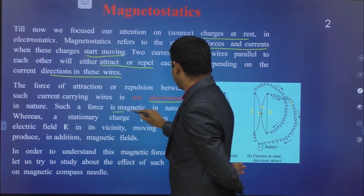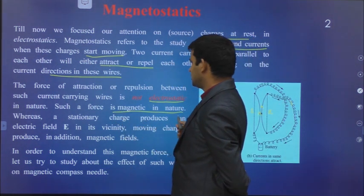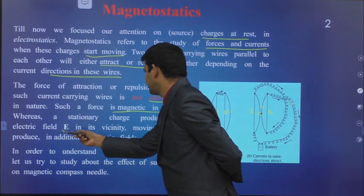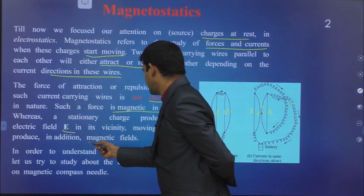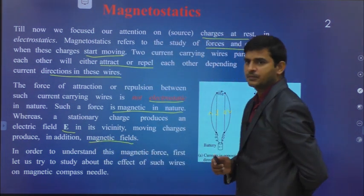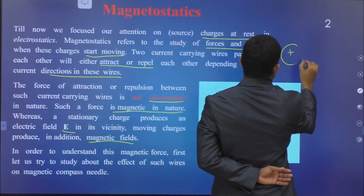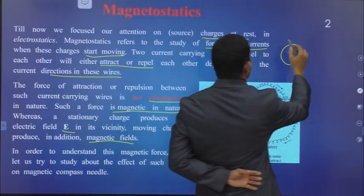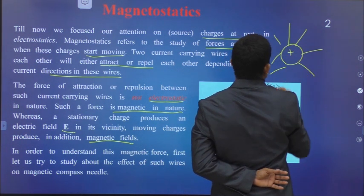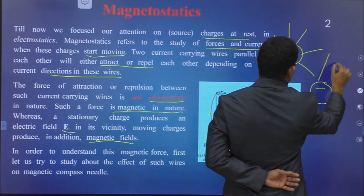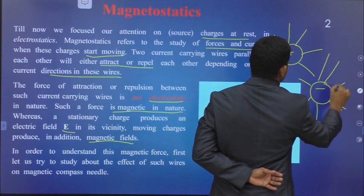Such a force is magnetic in nature. Whereas a stationary charge produces an electric field E in its region, moving charges produce in addition what is called a magnetic field. Already you know in electrostatics — when a positive charge is there, all electric lines of force are radially outwards, and if it is a negative charge, all electric lines of force are radially inwards.